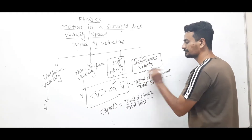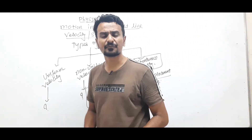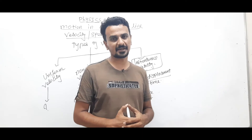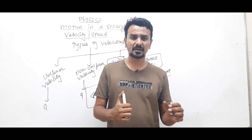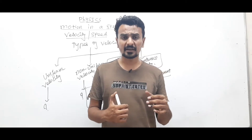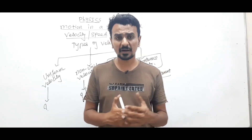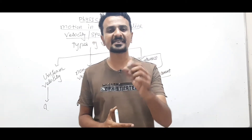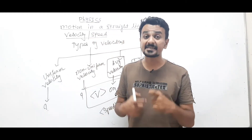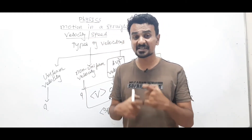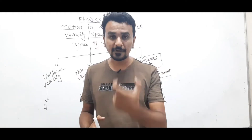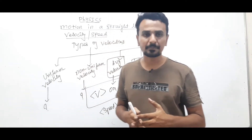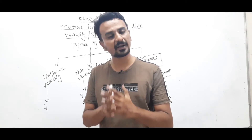Instantaneous velocity means the velocity of any object at a particular instant of time. Suppose I am driving a car and a friend phones me asking what speed I am driving at. I say the speed is 50 right now. That 50 represents instantaneous velocity — at that particular instant the speed is 50. It does not represent average. At a particular instant of time, the speed of any object is termed as instantaneous speed or instantaneous velocity.